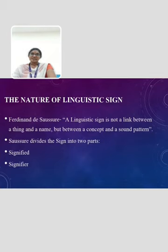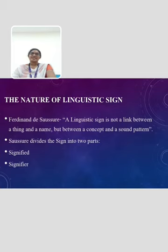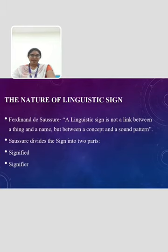The nature of linguistic sign. According to Ferdinand de Saussure, a linguistic sign is not a link between a thing and a name, but between a concept and a sound pattern. Saussure divides the sign into two parts: the signified and the signifier.